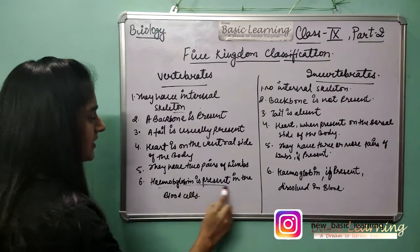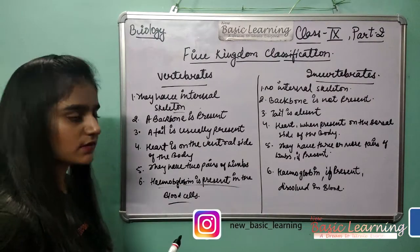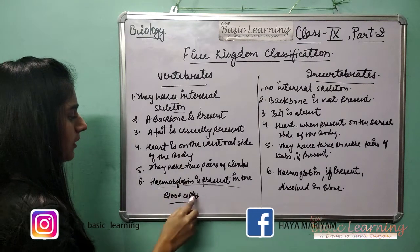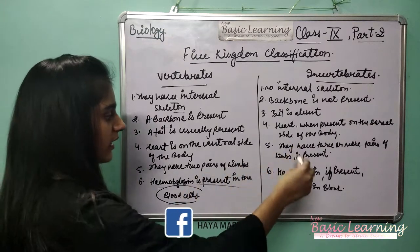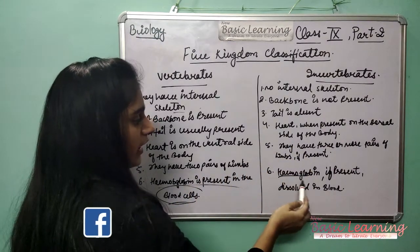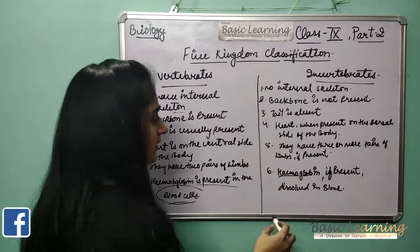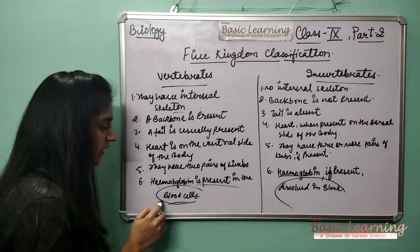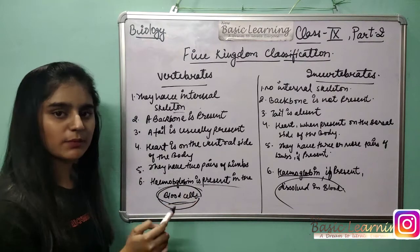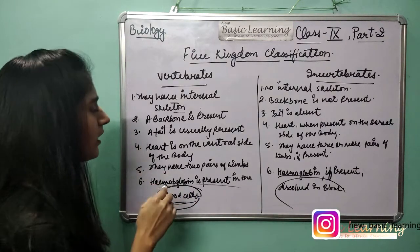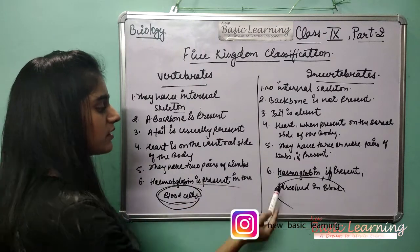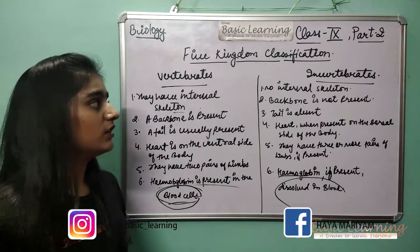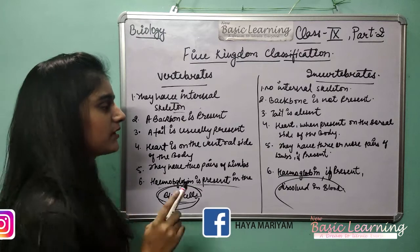Sixth difference: hemoglobin is present inside the blood cells in vertebrates. In invertebrates, if hemoglobin is present, it is dissolved in the blood — not inside blood cells. So this is the difference regarding hemoglobin between vertebrates and invertebrates.